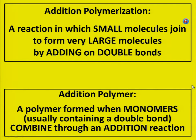Addition polymerization: a reaction in which small molecules join to form a very large molecule by adding on double bonds. Addition polymer: a polymer formed when monomers, usually containing a double bond, combine through an addition reaction.